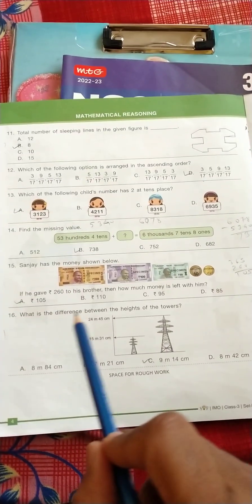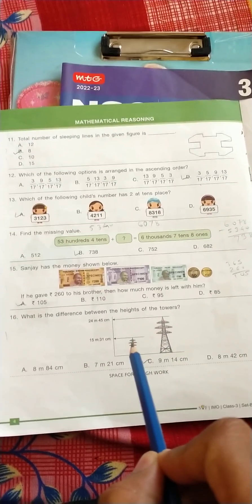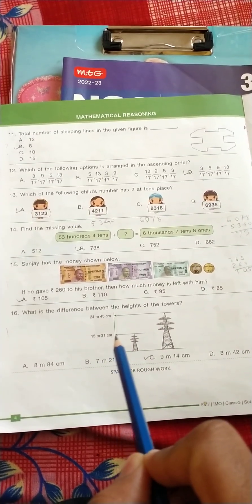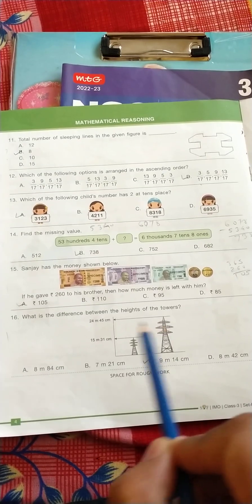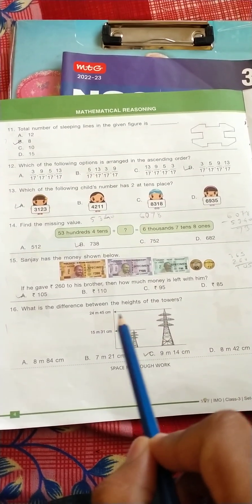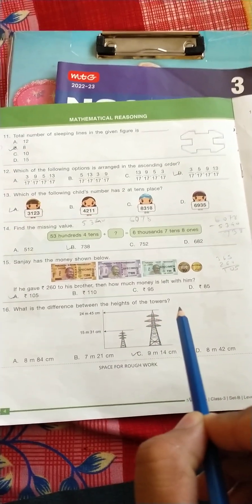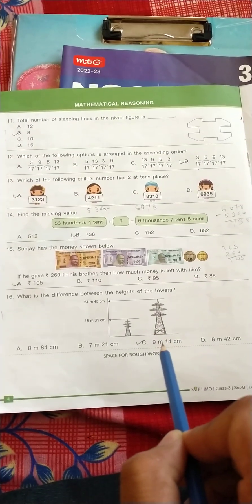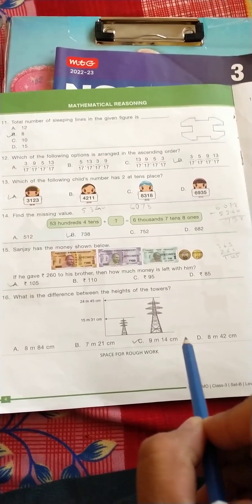What is the difference between the height of the towers? The first tower height is 15 meter 31 centimeter and the second one is 24 meter 45 centimeter. So it's simple subtraction. So the correct answer is 9 meter 14 centimeter.